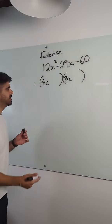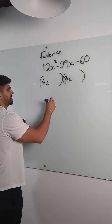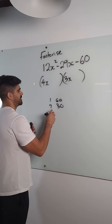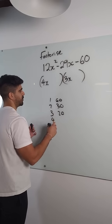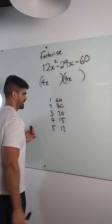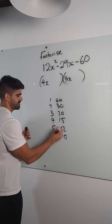Now, with 60, we have quite a lot of options, but we can easily break it down. So, 2 and 30, 3 and 20, 4 and 15, 5 and 12, 6 and 10, and that's it.